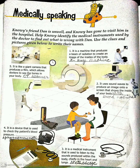The first picture here — as you can see, it is written: it is a machine that produces a beam of radiation to create an image of the insides of the body. It is the X-ray machine.